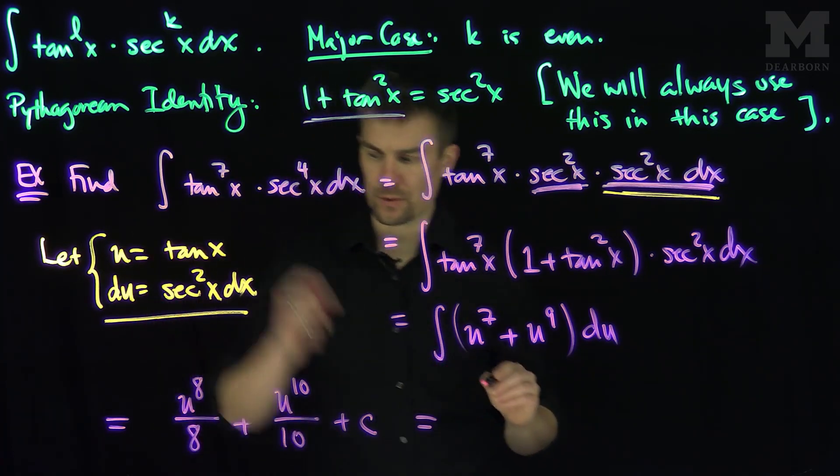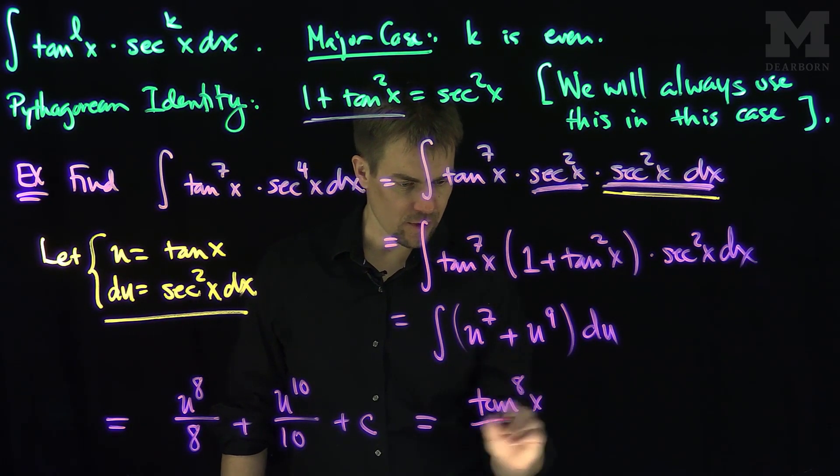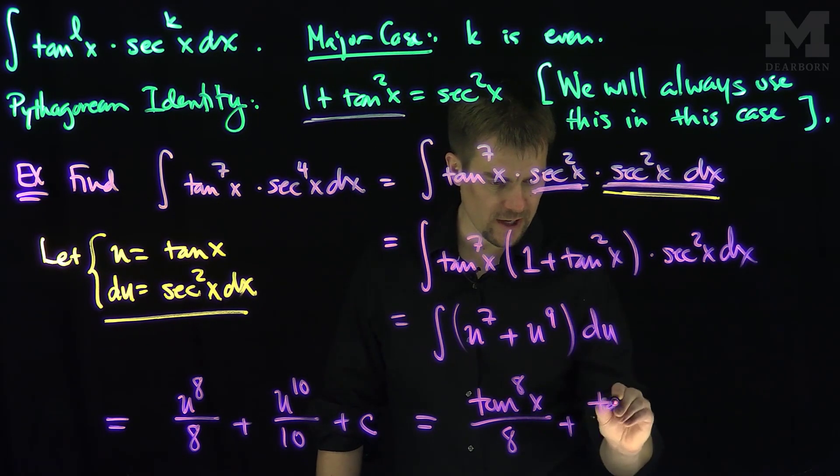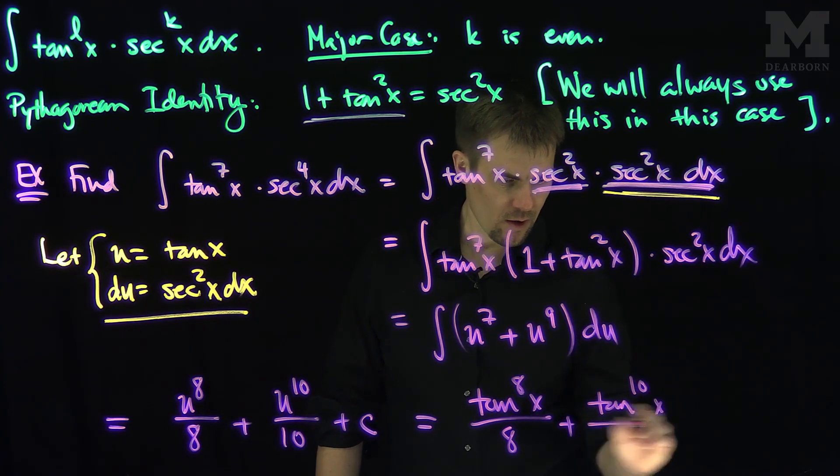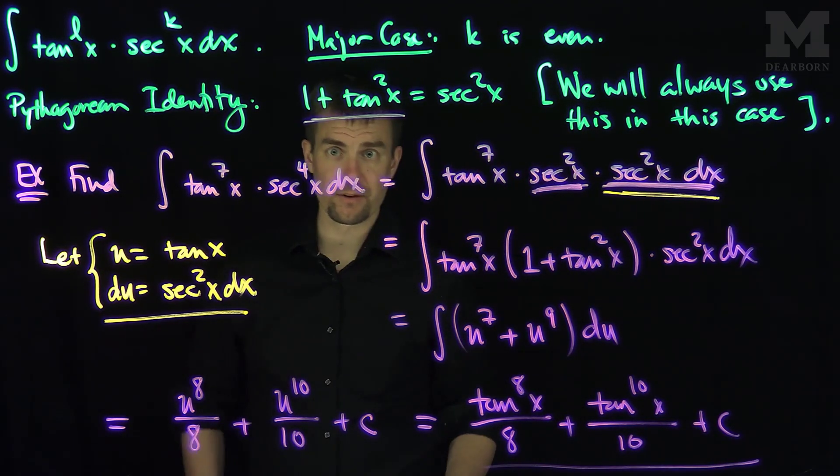And therefore the antiderivative, since u is tangent, I'll have tangent to the power of eight of x over eight plus tangent to the power of ten of x over ten plus a constant c. And there is your antiderivative.